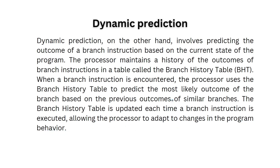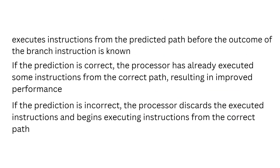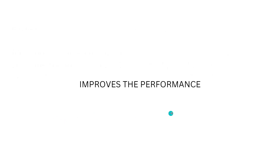The Pentium processor also uses a technique called speculative execution, where the processor begins executing instructions from the predicted path before the outcome of the branch instruction is known. If the prediction is correct, the processor has already executed some instructions from the correct path, resulting in improved performance. If the prediction is incorrect, the processor discards the executed instructions and begins executing from the correct path. Overall, branch prediction improves performance by reducing the number of pipeline stalls due to branch instructions.